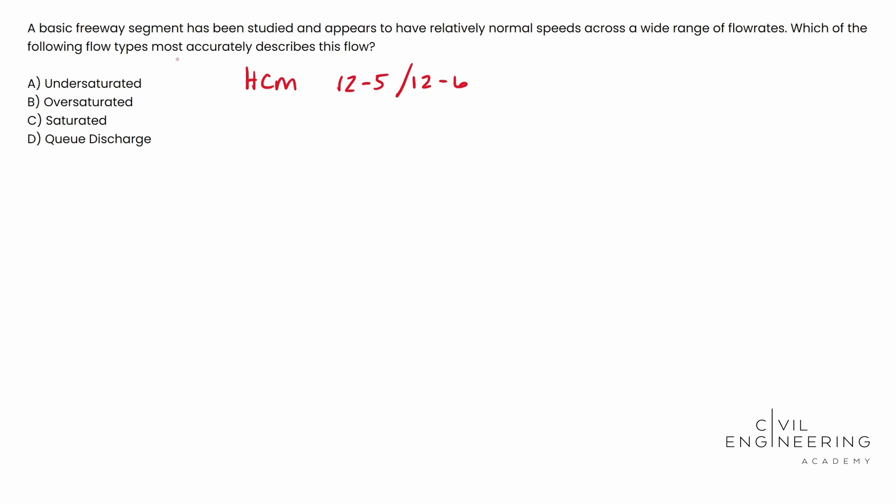In our case, it says it appears to have relatively normal speeds. It should click right there. Normal speeds. What is normal speed? That's unsaturated flow. Oversaturated flow, you're going slow. You're crammed in, you're watching the wreck. Q discharge is where you're accelerating. So you're not at normal speeds, you're accelerating. And also there is a wide range of flow rates. And so your flow rates change every now and then, depending on how many vehicles you have in your system or that segment. So which of the following flow types most accurately portrays this flow? This one's going to be A.